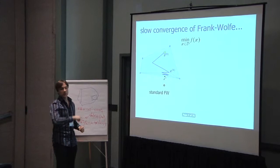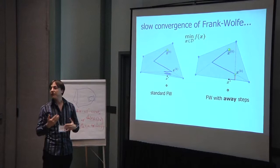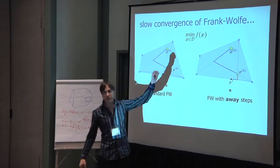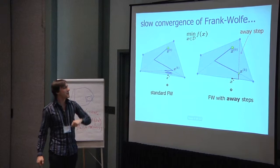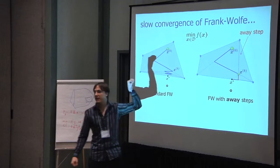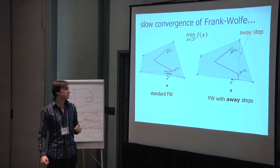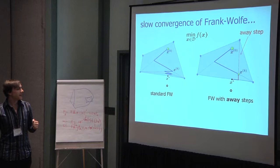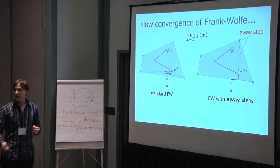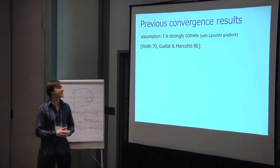Wolf in 1970 proposed a modification, which was the away steps, which add other types of directions that you can look into. In particular, you can move away from the corners in the active set. So this away step basically moves from the worst corner in the current expansion of your iterate. And in particular, in this case, it would converge very quickly, and it will have linear convergence for a strongly convex objective.